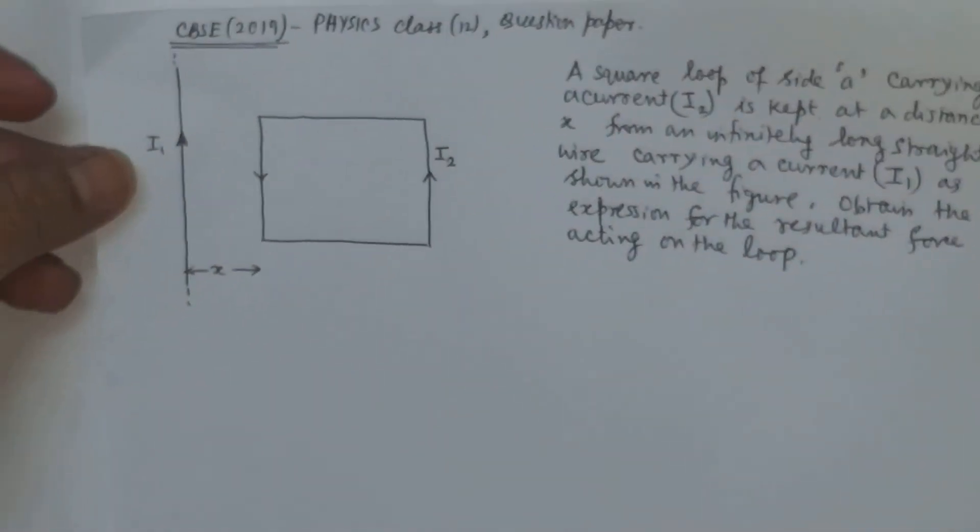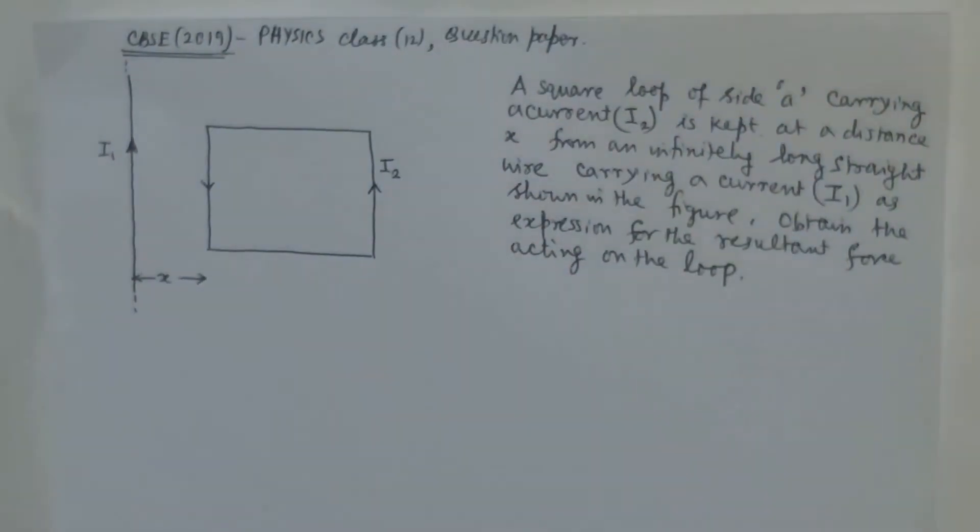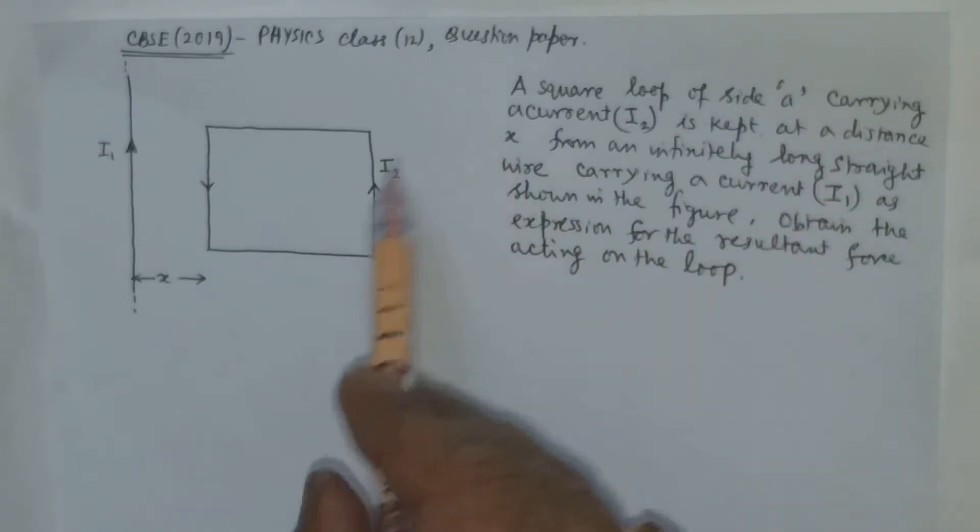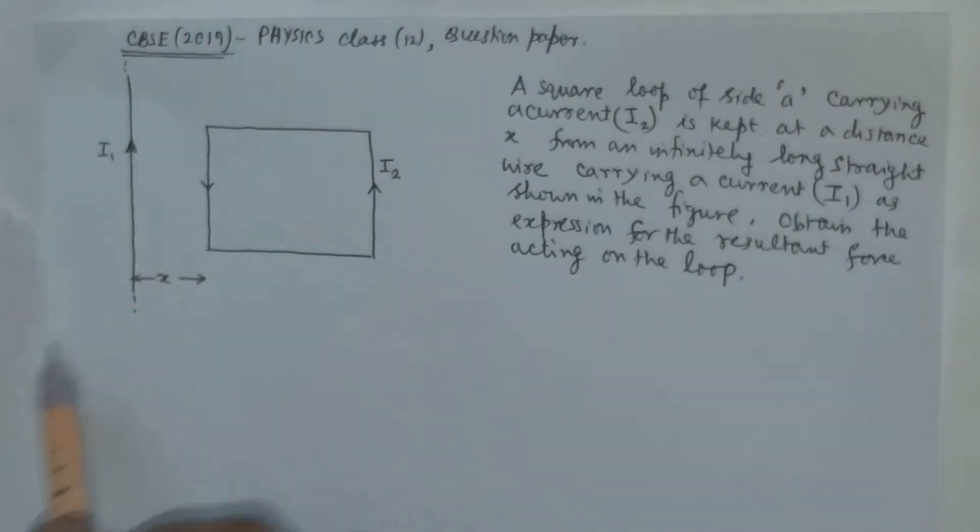Now the other question follows. They have given that a square loop, just see the question: A square loop of side A carrying a current I2 is kept at a distance x from an infinitely long current carrying wire carrying a current I1, as shown in the figure. Obtain the expression for the resultant force acting on the loop.